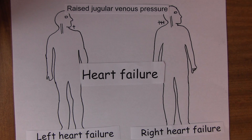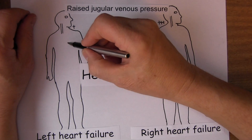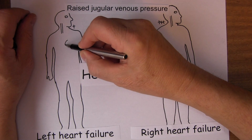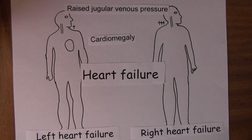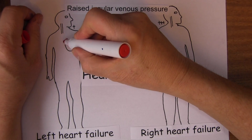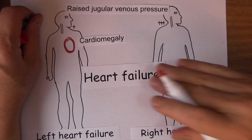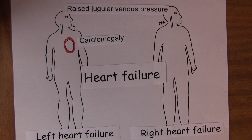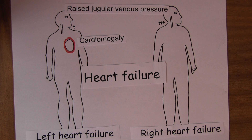Cardiomegaly is another feature. The heart normally doesn't occupy more than half of the diameter of the chest. If the heart has increased from its normal size, that's cardiomegaly, and that's predominantly a feature of left heart failure. The workload of the left ventricle is increased, there's left ventricular hypertrophy, an increase in the size of the individual cardiac myocytes, and we get this overall enlarged heart — very obvious on chest x-rays.